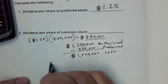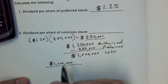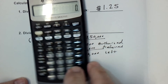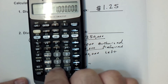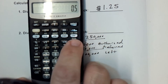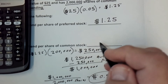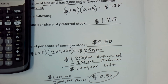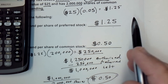We've got $1,000,000 left to be distributed to 2 million outstanding shares. Taking $1,000,000 and dividing it by 2,000,000 shares, each shareholder gets $0.50. So $0.50 per share is the dividend for common stock. In this particular example, the preferred shareholders got a lot more than the common shareholders, but that's not always the case — that's just how it worked out here.